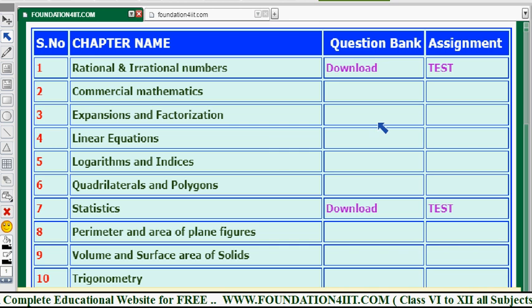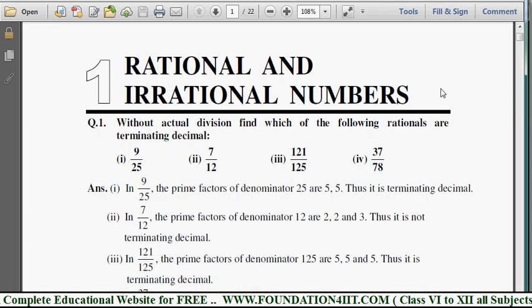These are the number of chapters. All the chapters' question bank and assignment links are provided in the description below. Just go through from this class. Let me show you one chapter here - Rational and Irrational Numbers. Let me show one question bank and assignment.